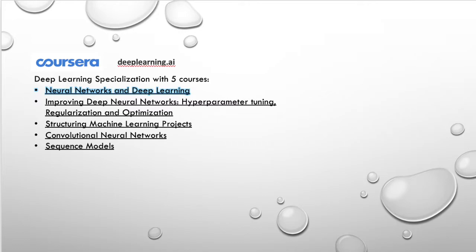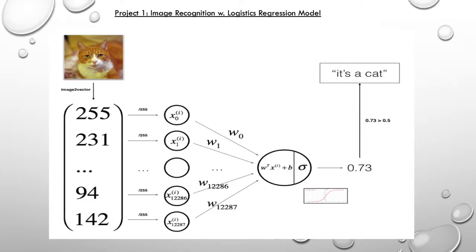The first course, Neural Networks and Deep Learning, teaches you step by step how to build a deep learning network from scratch. The first project uses logistic regression model to solve image recognition. The logistic regression model was built in a way that's similar to a neural network.